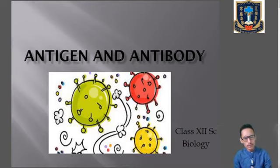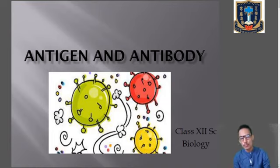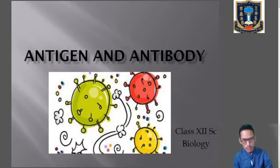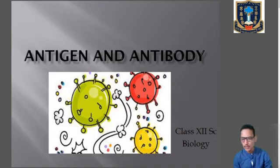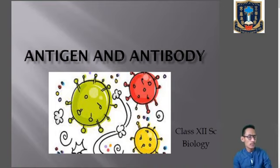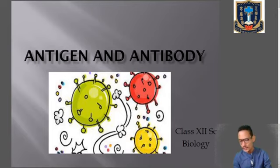We also learned about the types of immunity. There are two types: innate immunity and acquired immunity. Innate immunity means the immunity present in an individual from the time of birth — also called natural or inborn immunity. Acquired immunity, also called specific immunity, is acquired by an individual throughout its lifetime.